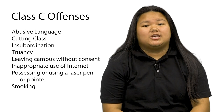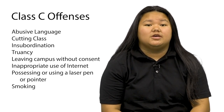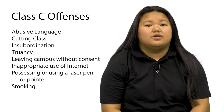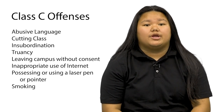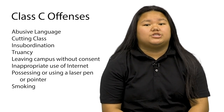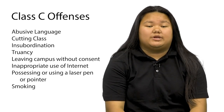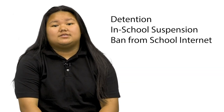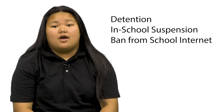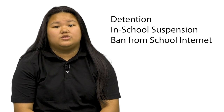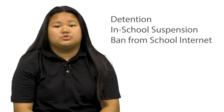Class C offenses include the following: abusive language, cutting class, insubordination or not listening to teachers or staff, truancy, leaving campus without consent, inappropriate use of the internet, possessing or using a laser pen or pointer, and smoking — including the possession or use of e-cigarettes, vapes, or other smoking-related substances. Consequences for Class C offenses may include detention, in-school suspension, a ban from school internet access for up to one school calendar year, and any consequences deemed appropriate by school administration.